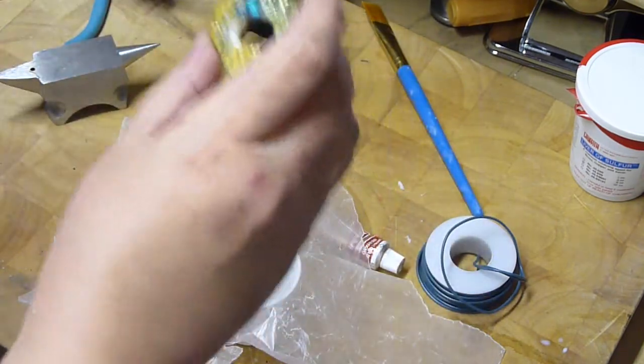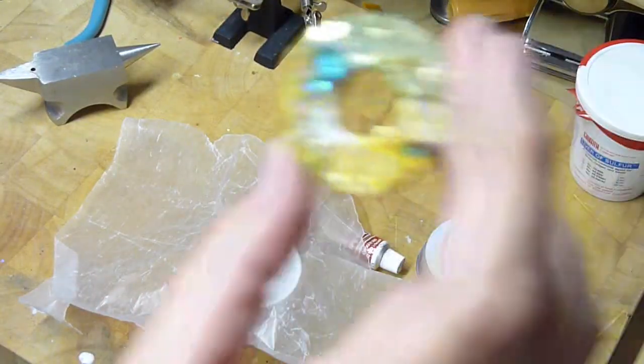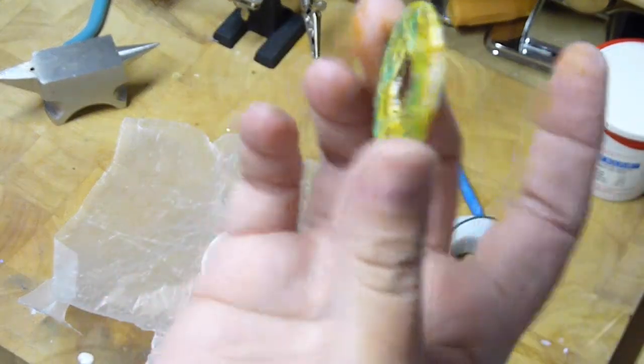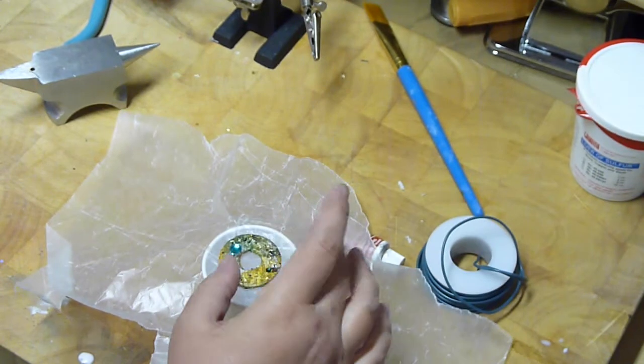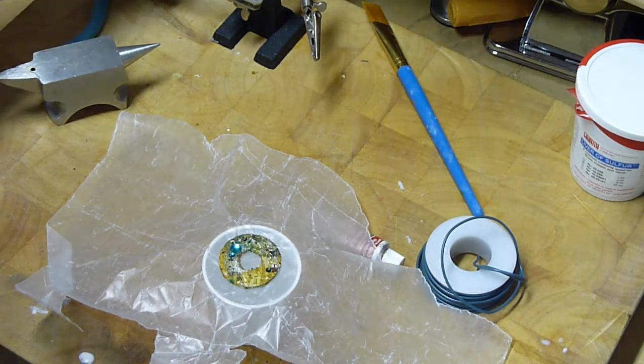We're just going to pull the pendant that we've made with the little jewels glued on, and we're going to coat it with something called triple thick. Now I know you've seen some of the other tutorials so you've seen me use this. This stuff is great.